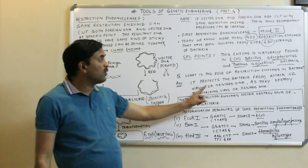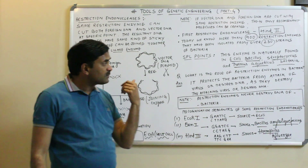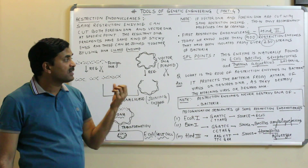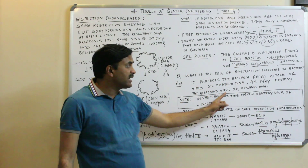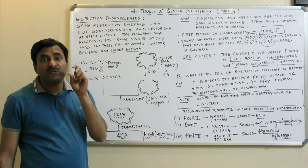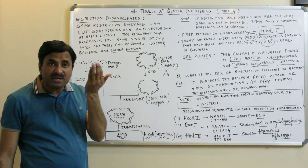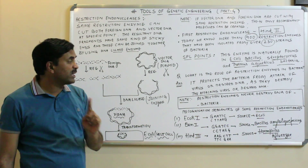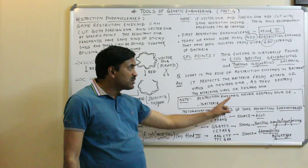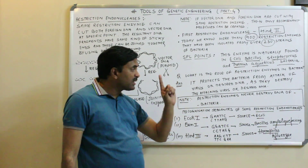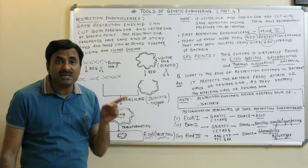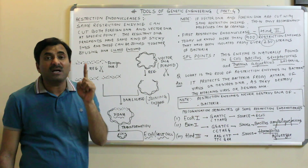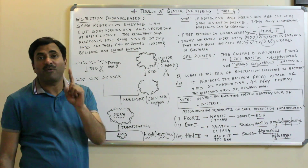Whenever a virus attacks the bacteria or foreign DNA enters the bacteria, the restriction enzymes destroy the attacking virus or the incoming foreign DNA, thereby giving protection to the bacterial cell. One more important point: restriction enzymes are found in the bacterial cell but they never destroy the DNA of the bacterial cell in which they are found — they only destroy the foreign DNA or the attacking virus.